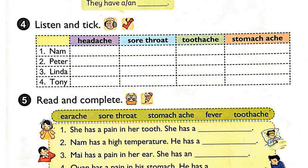Page 7. Activity 4. Listen and tick. 1. What's the matter with you, Nam? I have a bad toothache. Oh, poor you! 2. Where's Peter, Linda? He can't come to school today. He's seeing the doctor. What's the matter with him? He has a stomachache.